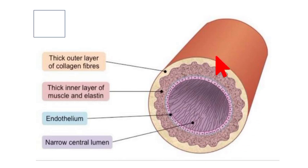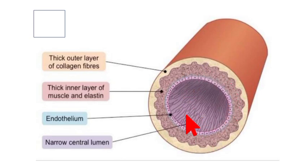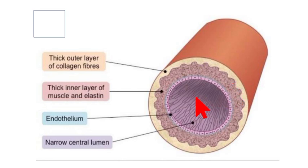Tunica media is the middle layer. It is made up of smooth muscles and elastic fibers. Tunica intima is made up of a flattened single row of endothelial cells. Inside the endothelium is a narrow lumen.